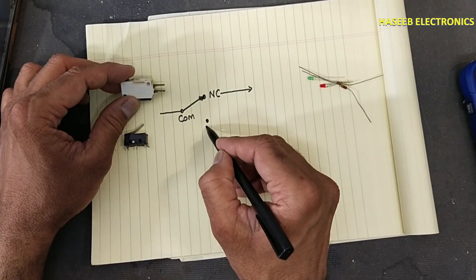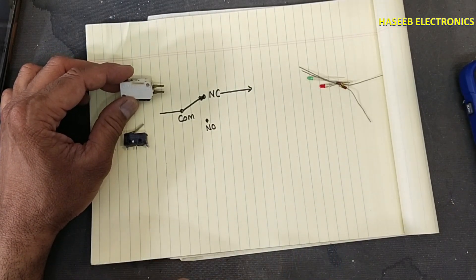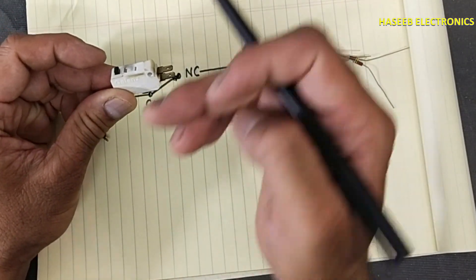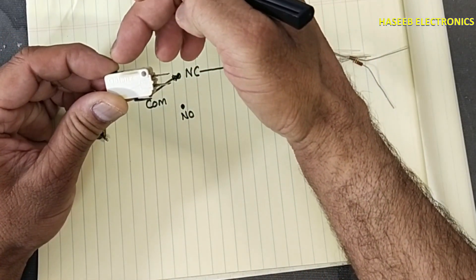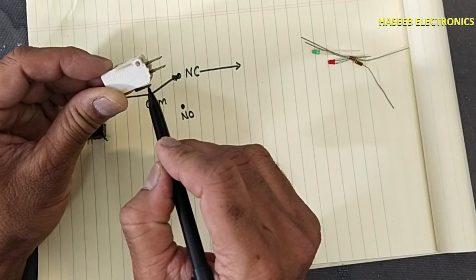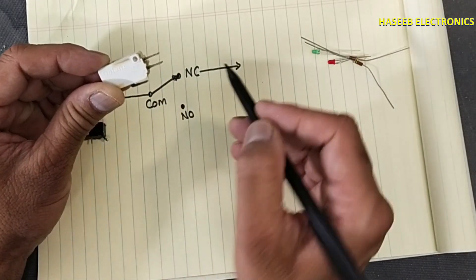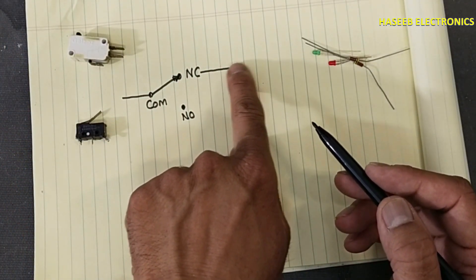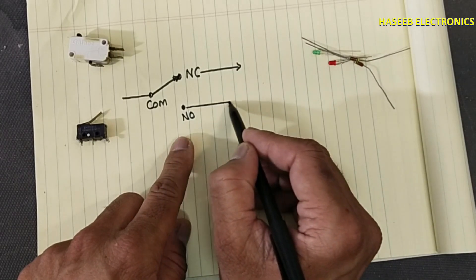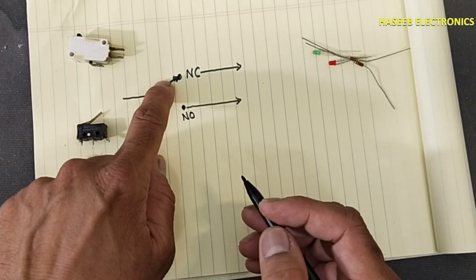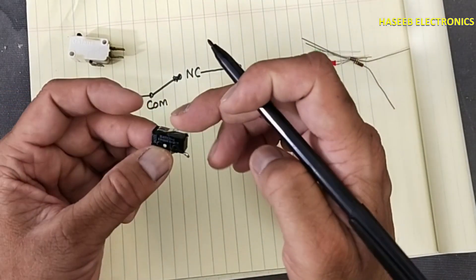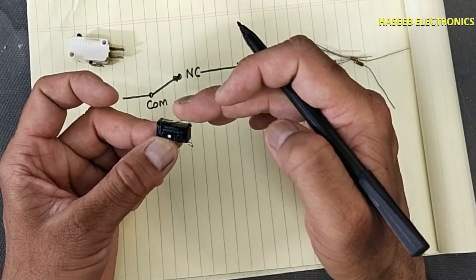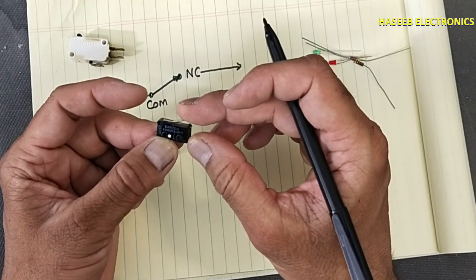There is normally open point, normally closed, normally open. When any object will press this micro switch it will shift this contact with this one. So the line which was connected here will divert. This lever, this arm will shift here. The same way, it has an arm here which is controlled with any sliding object.